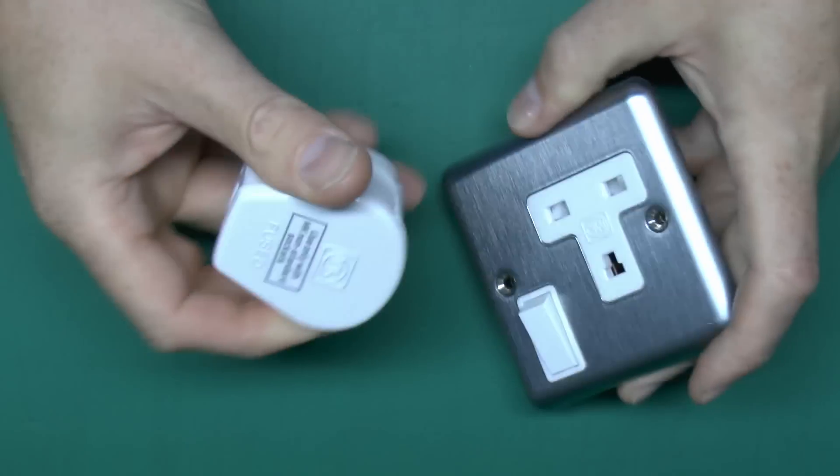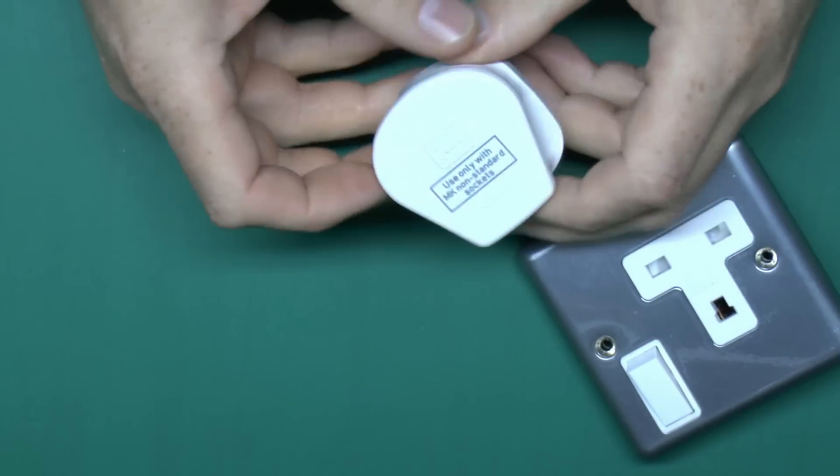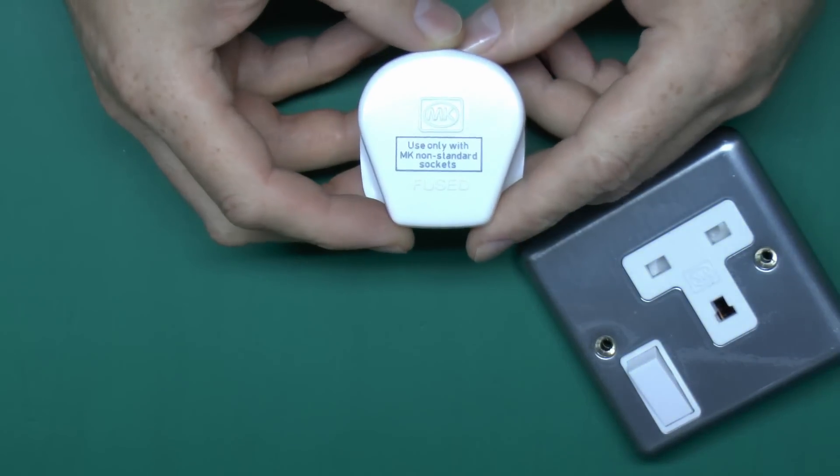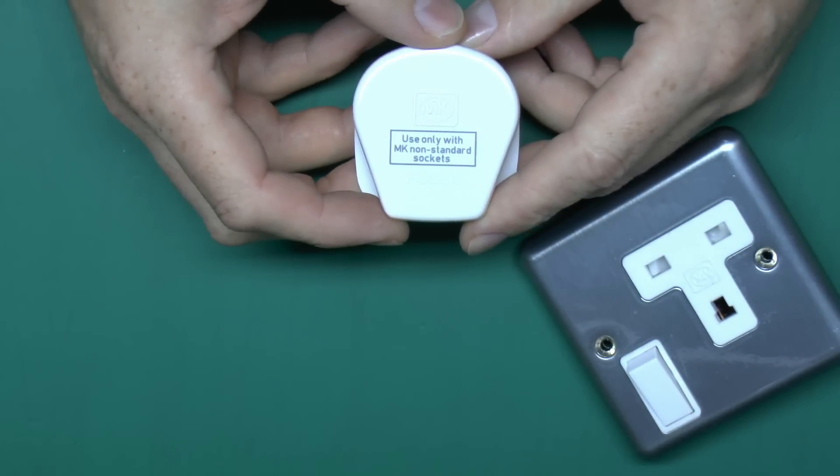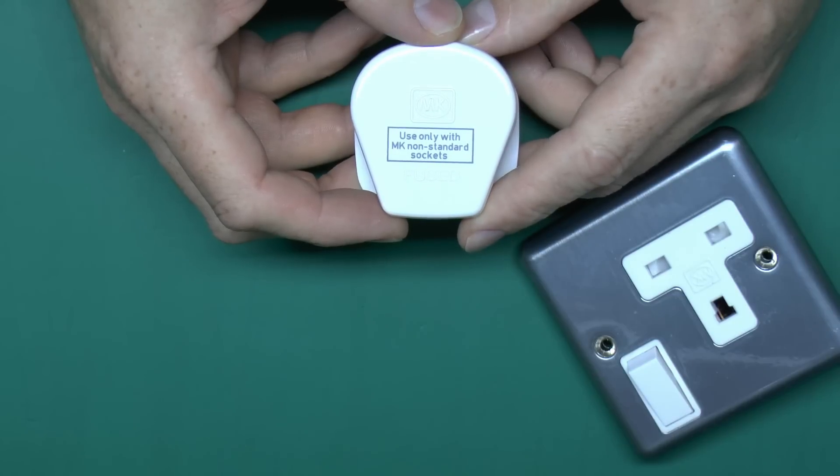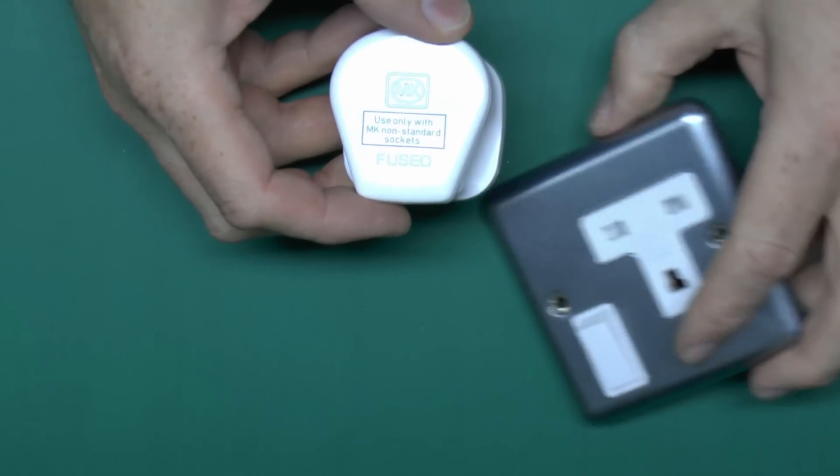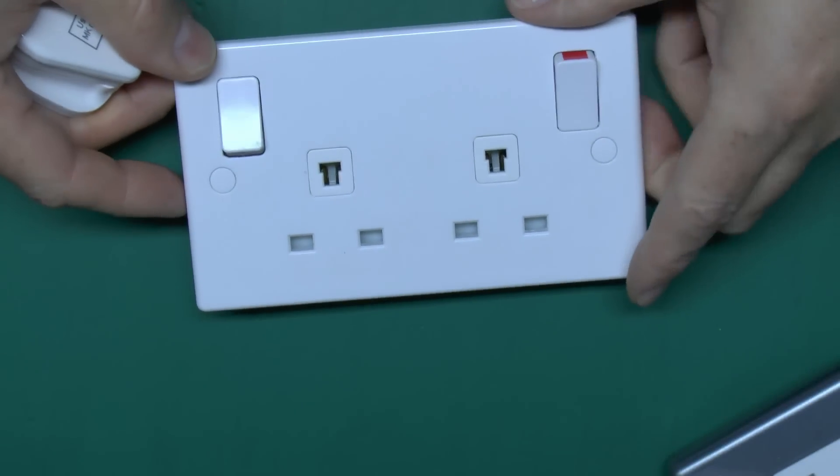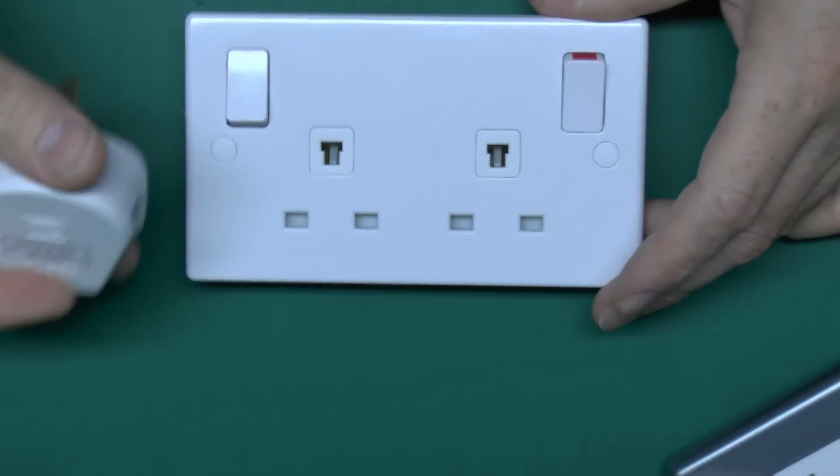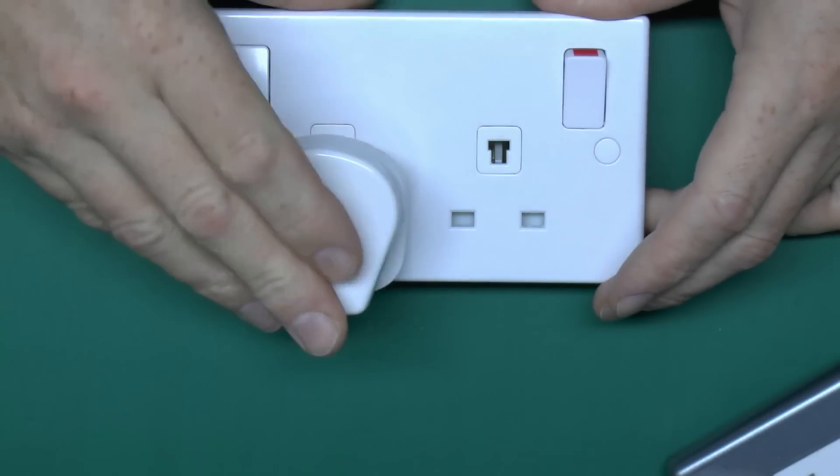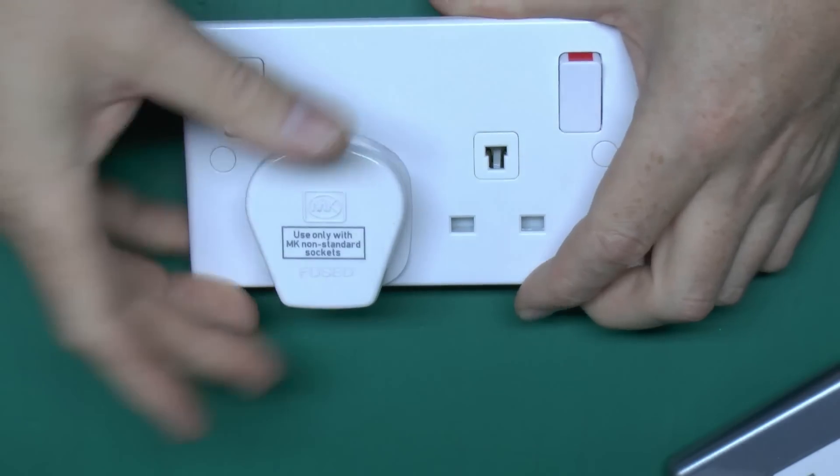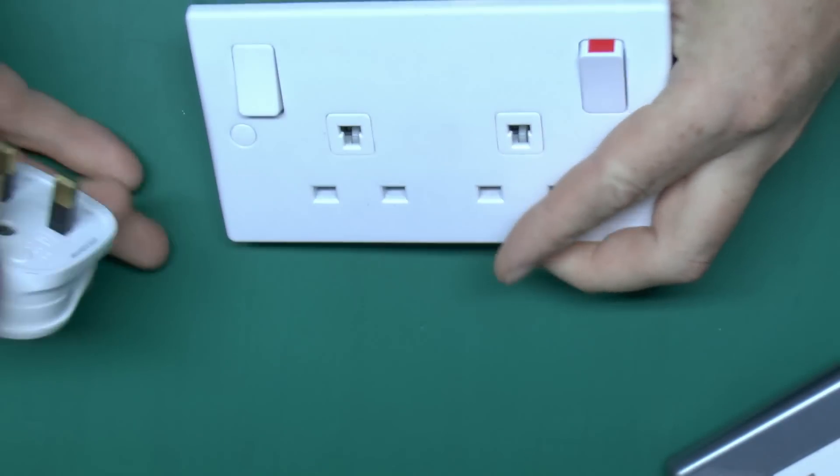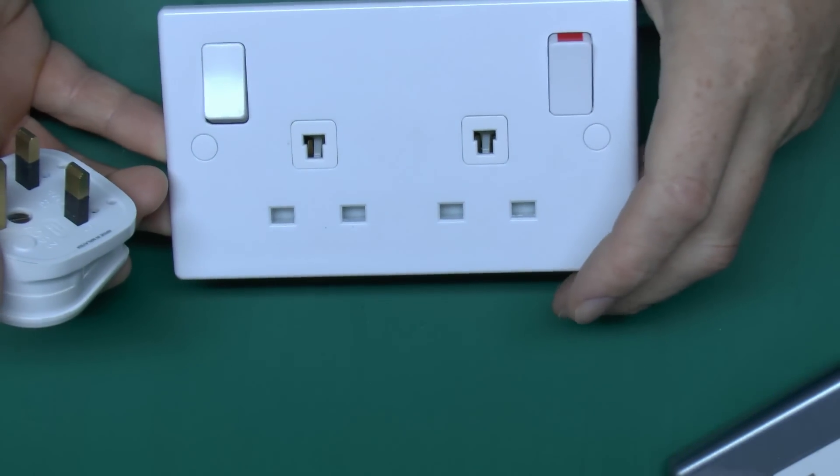This is a current type you can still buy, it's readily available. You can see there it's got the wording on which states that you'll only use it with the MK non-standard socket, which of course this is. However, another manufacturer does actually make these. This is made by GET, part of the Schneider Electric Group now, and it's the same design and the MK plug does actually fit into it perfectly well. So again, that's the same style but from a different manufacturer.